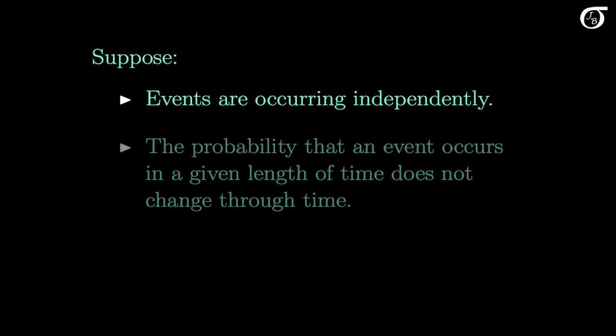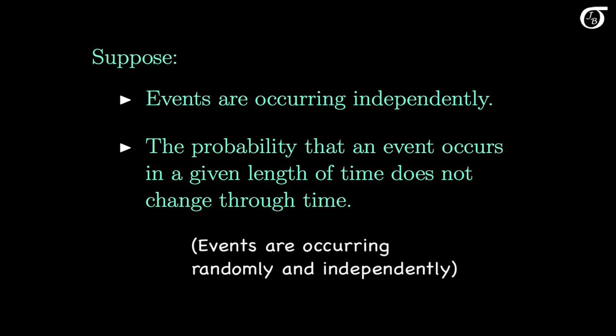Phrasing the following in terms of time, though the same ideas hold for distance, area, or volume: suppose events are occurring independently. In other words, knowing when one event happens gives absolutely no information about when another event will occur. And the probability that an event occurs in a given length of time does not change through time — the theoretical rate at which events are occurring does not change through time. More loosely, we might say the events are occurring randomly and independently.